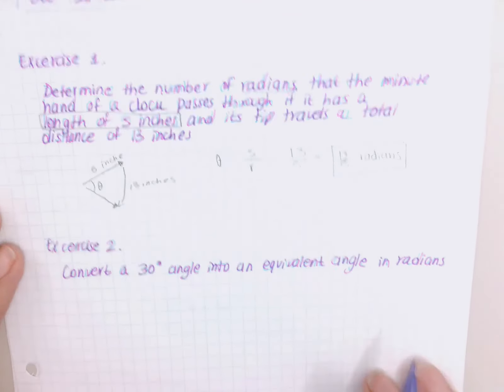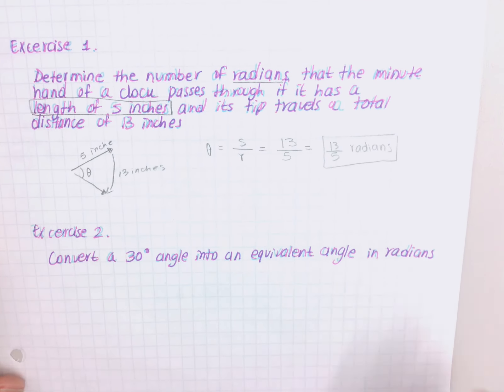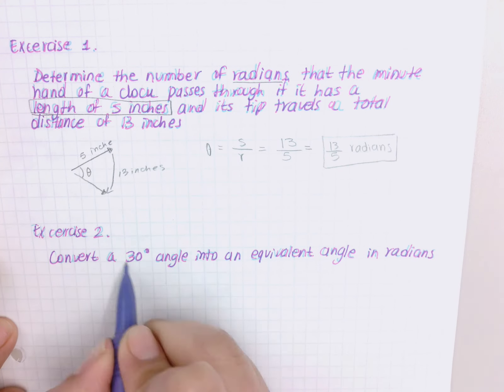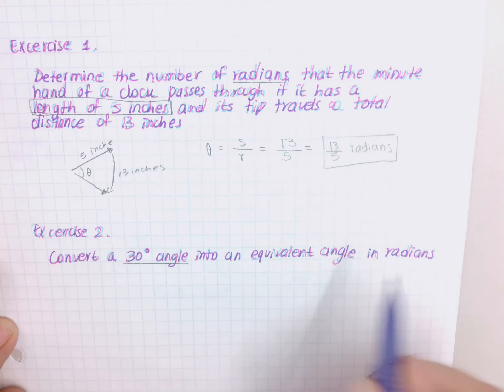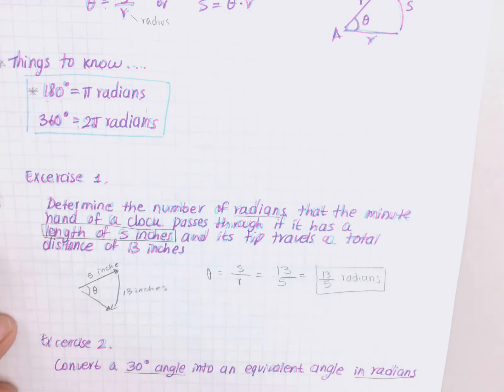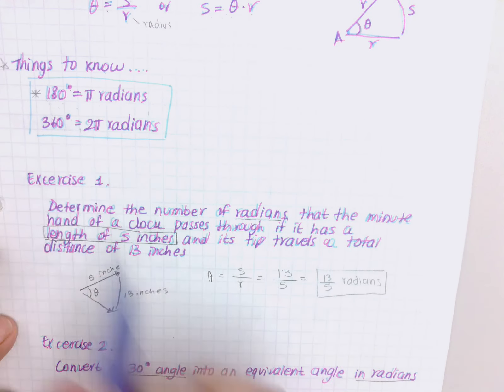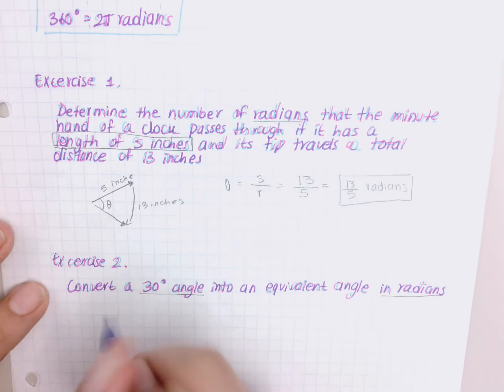Then you're going to try to see what do I use - do I use this, do I use this, do I use something else? That's always going to be the case. For exercise two, we're going to convert a 30 degree angle - so they're giving us the angle - into an equivalent angle in radians.